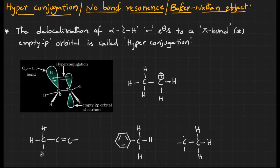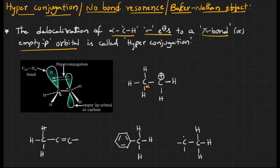What does hyperconjugation mean? It is the delocalization of alpha C-H sigma electrons to a pi bond or empty p orbital. The alpha position is the carbon placed next to a cation, pi bond, or free radical. The hydrogen attached to the alpha carbon is known as the alpha hydrogen, and the electrons in that C-H bond are sigma electrons.